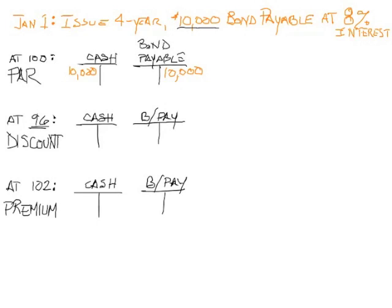That changes when I sell at a discount, because I only received 96% of face value. $10,000 times 96% is $9,600 in cash that I received for that $10,000 bond. At the end, I still have to give them $10,000, even though they only gave me $9,600 up front. My bond payable is still $10,000, but I'm out of whack here.